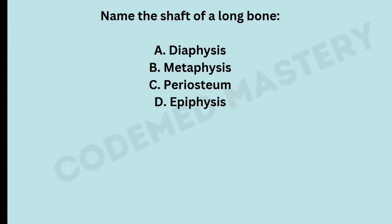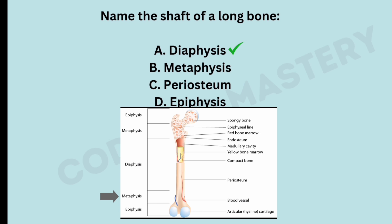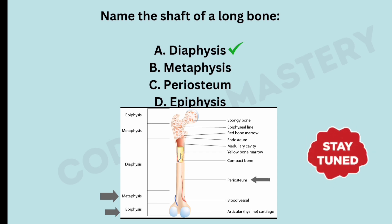Name the shaft of the long bone. Option A: diaphysis. Option B: metaphysis. Option C: periosteum. Option D: epiphysis. The right answer is option A, diaphysis. The metaphysis is the region of a long bone between the diaphysis and the epiphysis. The periosteum is a dense layer of vascular connective tissue that covers the outer surface of all bones. The epiphysis is the rounded end of a long bone. You can find this diagram in your ICD-10-CM manual under anatomical illustrations. That's it for today — stay tuned for more important content related to CPC exam and medical coding.